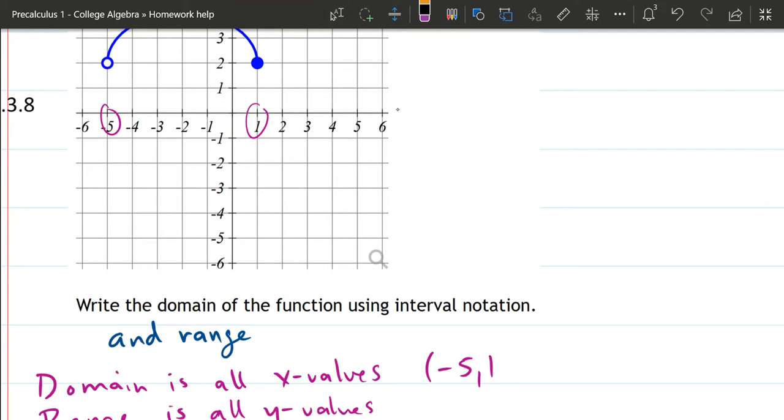Now for positive 1, this point is filled in, which means use positive 1. And that's going to be a square bracket.